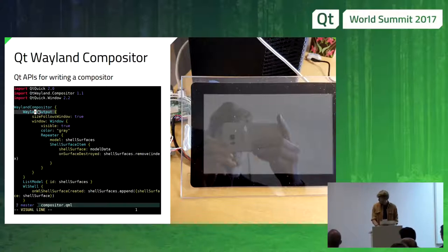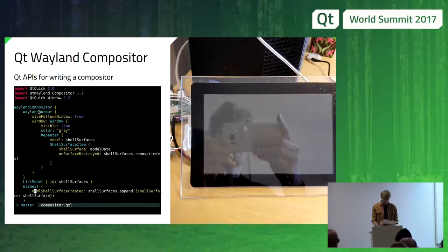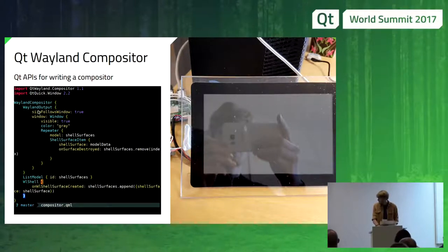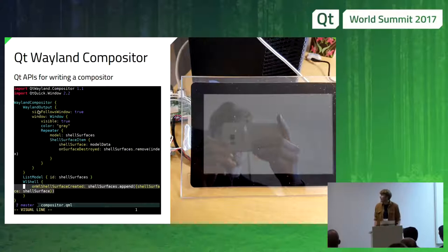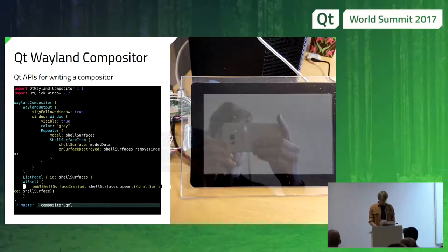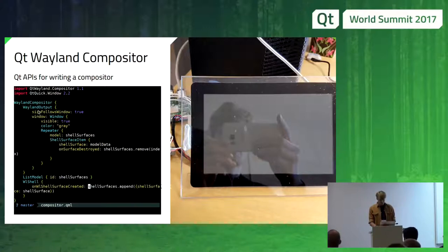Then there is the Wayland output, which is basically the screen as seen from the client — it has a size and maybe different modes. We also have a component called wl_shell, which is a shell extension. The important thing here is the signal on wl_shell surface created, which is emitted whenever a client has a shell surface — the same as a window — and wants to display it on screen.